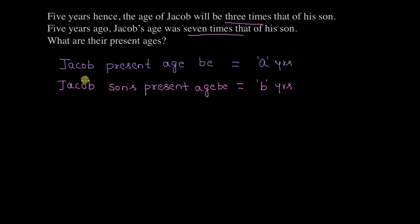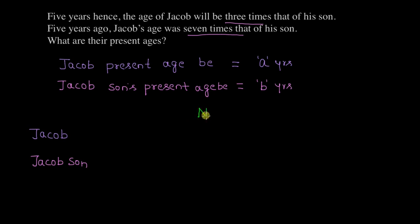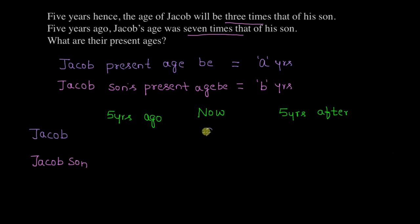We are talking of two persons — Jacob and Jacob's son — across three different times: the present, five years ago, and five years after. We have already considered Jacob's present age as A years and that of his son as B years.